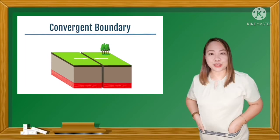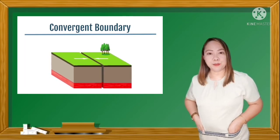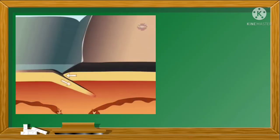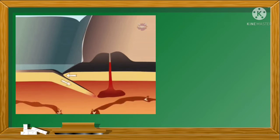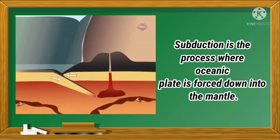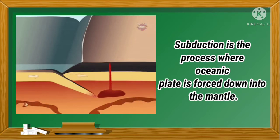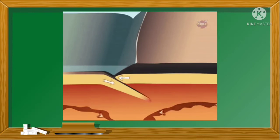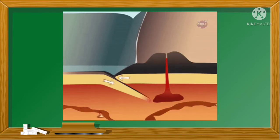Let us start with the convergent plate boundary. In a convergent plate boundary, the lithospheric plates move toward each other. When continental and oceanic plates collide, the thinner and denser oceanic plate is overridden by the thicker and less dense continental plate. The oceanic plate is forced down into the mantle in a process known as subduction. As the oceanic plate descends, it is forced into higher temperature environments. At a depth of about 100 miles, materials in the subducting plate begin to approach their melting temperatures and the process of partial melting begins.